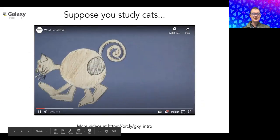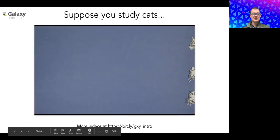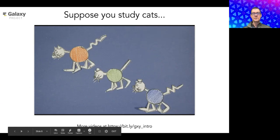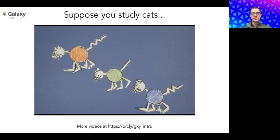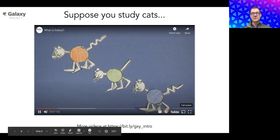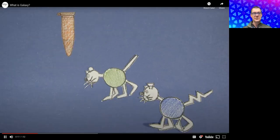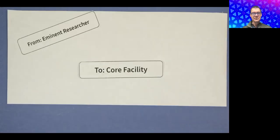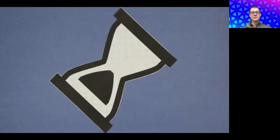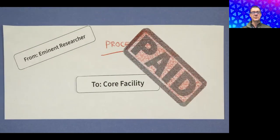Suppose you work with cats — they can be orange, green, or blue, with a variety of ear shapes and tail forms. What is the genetic underpinning of this phenotypic variability? You convert your cats into samples and send them to a core facility. As a good scientist, you sequence a hundred orange, a hundred green, and a hundred blue ones, and then you wait.